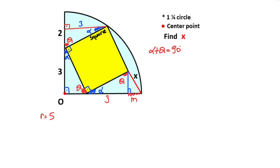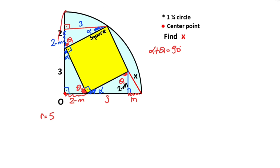If this segment is three plus m, that means two minus m is left on this side. So if the side opposite alpha equals two minus m, then the side opposite alpha here must also equal two minus m. Likewise, this length is also two minus m. We know the radius of the circle equals five, so m units remain here.